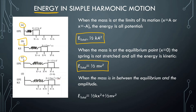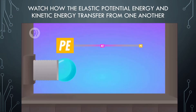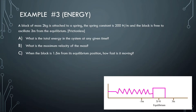And when the mass is in between the equilibrium and the amplitude, like scenario D, when it's not at the amplitude but somewhere in between, then the equation is going to be both elastic potential energy and kinetic energy. Alright, so let's start doing some problems with this.